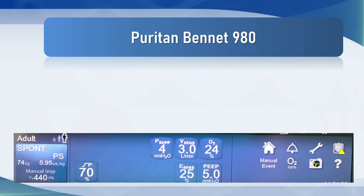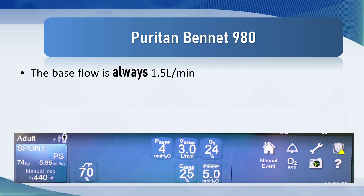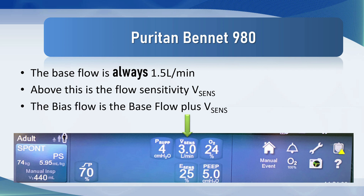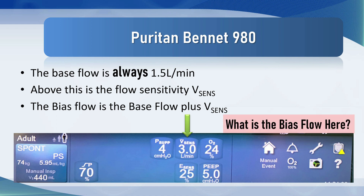This is a picture of the Puritan Bennett 980 ventilator. The base flow is always 1.5 liters. Above this is the flow sensitivity — the vSense — and the bias flow is the base flow plus the vSense, which totals 4.5 liters.